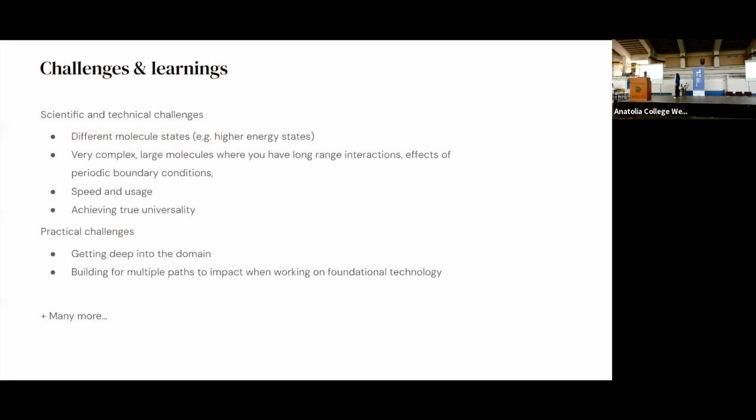So we had many scientific and technical challenges. On the scientific side, DFT is a ground state method. So trying to start thinking about how we can also look at quantum mechanical methods that look at different molecule states, higher energies, which again is where a lot of the exciting and important and useful chemistry happens. Again, I mentioned the whole scaling challenges. So very complex, large molecules where you start to have even more interesting interactions, like long range interactions. And when you start looking at solids, thinking about the effects of like periodic boundary conditions and things like that. Making sure that whatever it is we produced was actually practically usable in terms of speed and practicalities. And making sure that we actually achieve that true universality. So, in that data constraint environment, how can we make sure that our training data is representative enough that it really will be universal and can be applied to the whole broad range of chemistry that is out there.